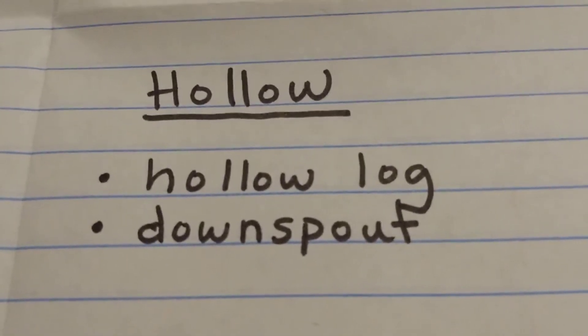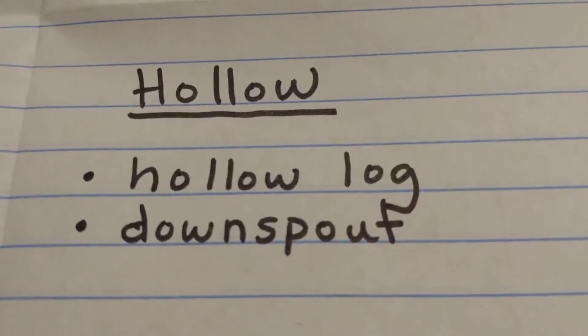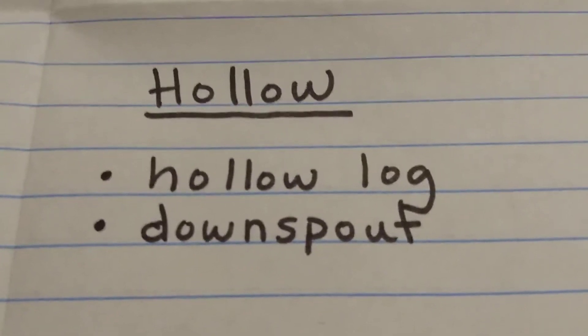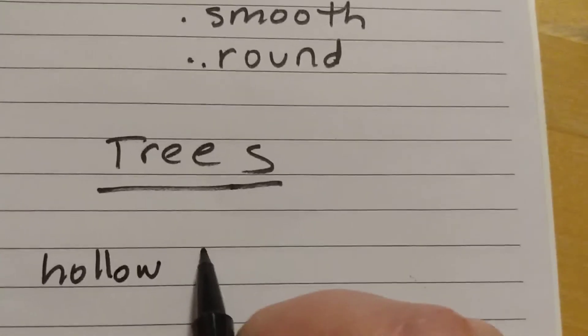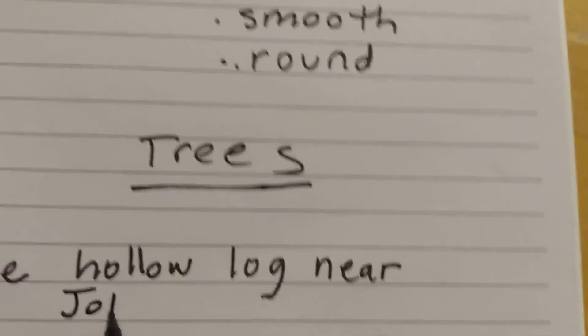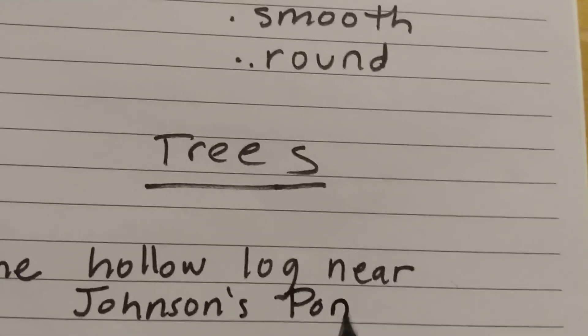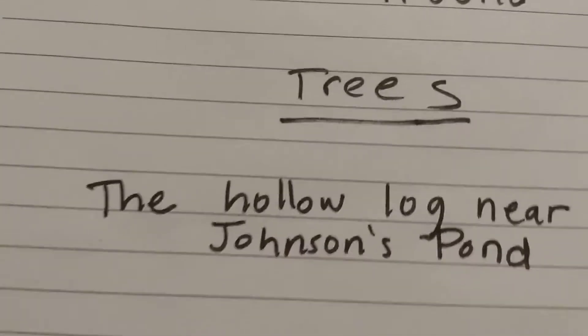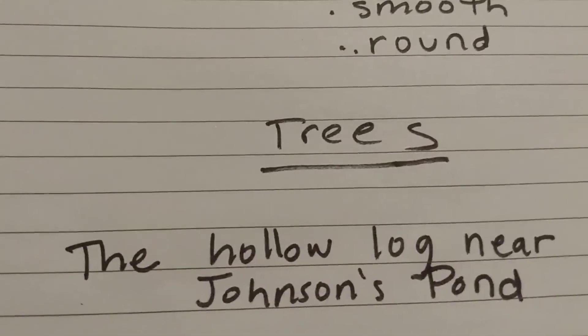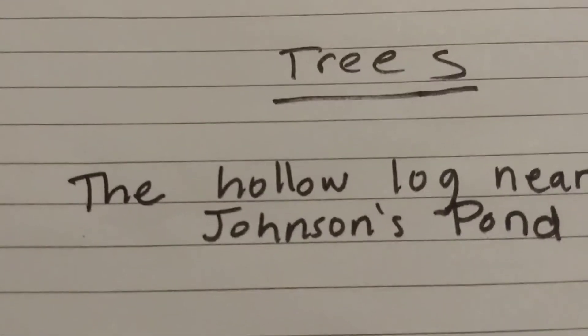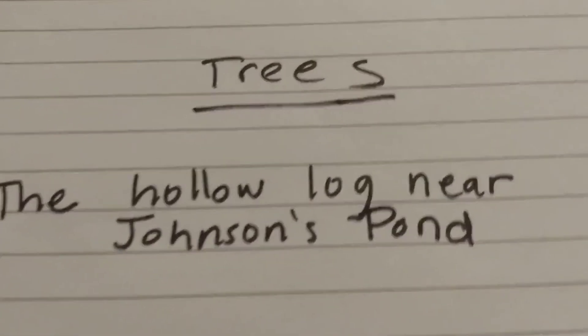If I could somehow follow a tree through its life, that feels like a poem. I feel like where I'd have to start would be with this hollow log, because that was the most interesting thing to me of all — the hollow log near Johnson's pond. I think that might be my first line. I'm just going to write that down: 'the hollow log near Johnson's pond.' I'm going to think more about that because I think that could make an interesting poem.